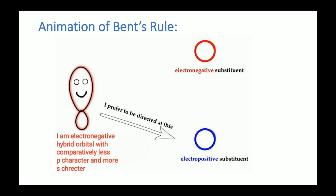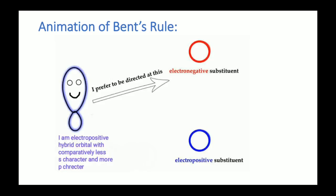I have made an animation for better understanding of Bent's Rule. If the S character is very less, then the hybridized orbital will be electropositive. If the S character is more, the hybridized orbital will be electronegative. An electronegative hybridized orbital will prefer an electropositive substituent, and vice versa — an electropositive hybridized orbital with less S character will prefer an electronegative substituent like fluorine. This is Bent's Rule: the less S character hybridized orbital will prefer the more electronegative element.